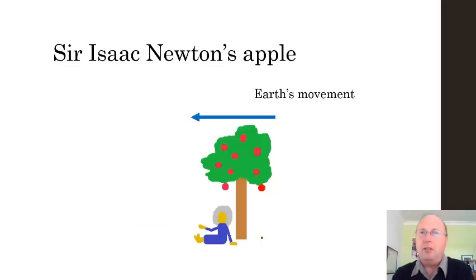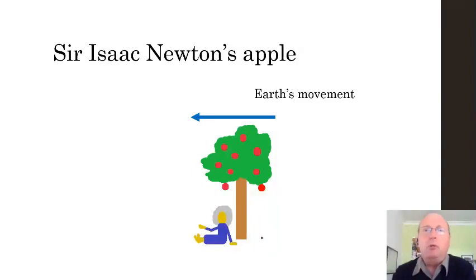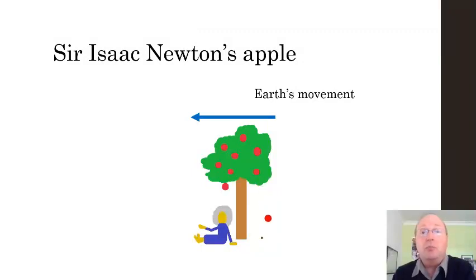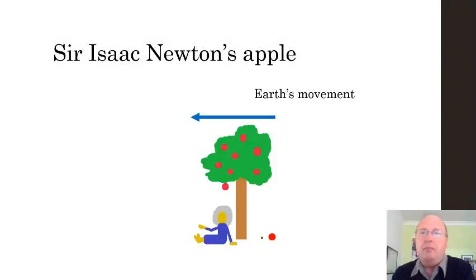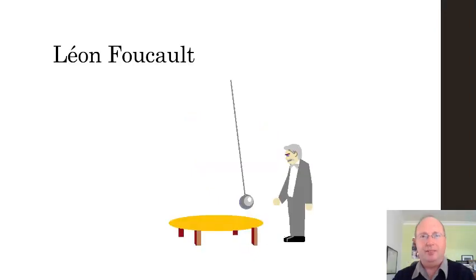The third piece of evidence comes from Sir Isaac Newton, who suggested we can measure the rotation of Earth on its axis by dropping a ball from a very high tower near the equator. As it fell, Earth would rotate underneath, causing the ball to miss a point vertically under its release point. We can see this today — many people have successfully measured this difference — but you need a really tall tower.